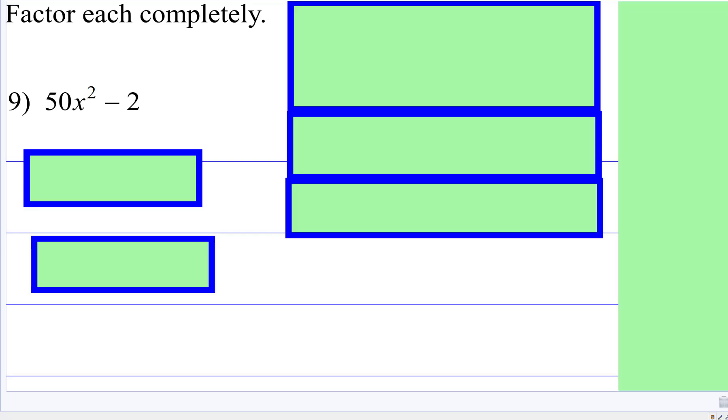When you are factoring a difference of squares, once in a while you are going to look at the two terms, and you are going to recognize immediately those are not perfect squares.